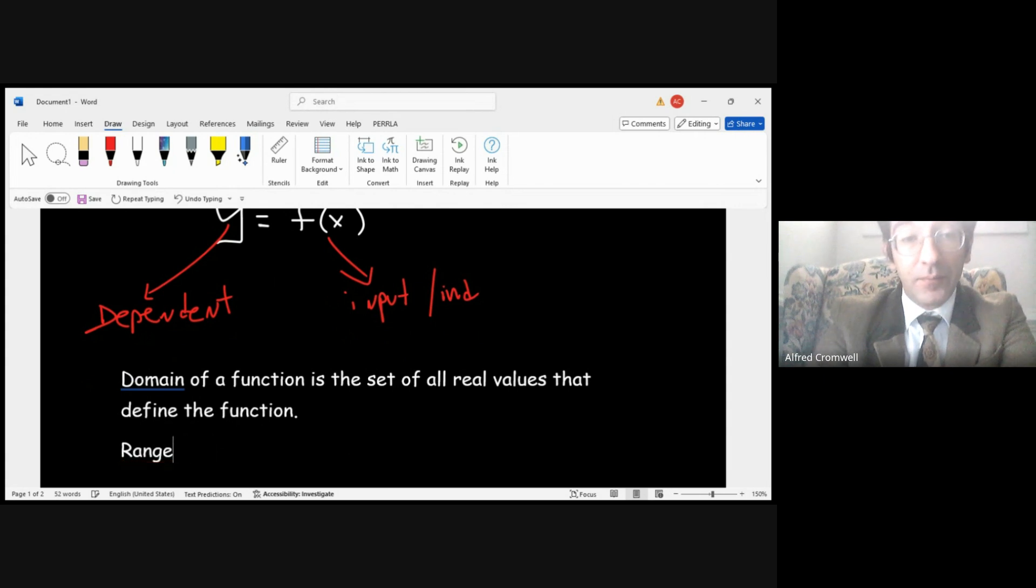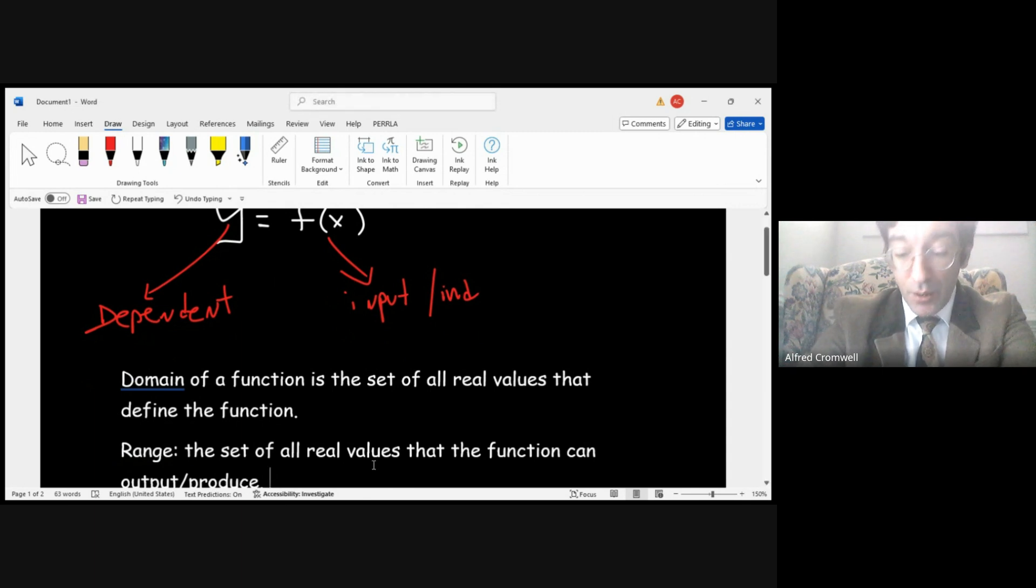The range is the set of all real values that the function can output or produce. For example, if your vending machine only sells soft drinks, you can't get candy—you can only get soft drinks in that vending machine.